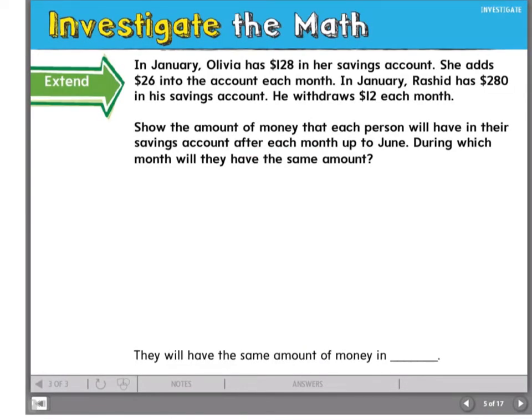Let's try one more example where we compare two sets of terms. In January, Olivia has $128 in her savings account. She adds $26 into the account each month. In January, Rashid has $280 in his savings account, and he withdraws $12 each month. Show the amount of money that each person will have in their savings account after each month up to June, and during which month will they have the same amount.